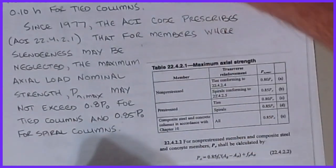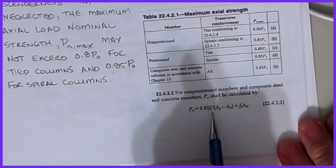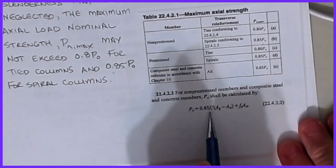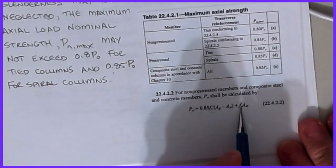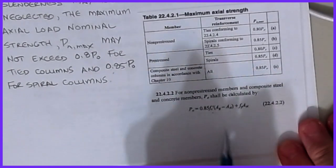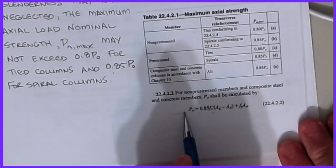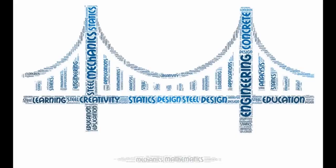This is the formula I gave you guys last time: it's 0.85f'c times the gross area minus the area of steel, plus the fy of the column multiplied by the area of the steel. Again if you're not understanding this formula, take a look at our last video and we can help you out with that as well.